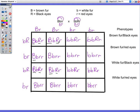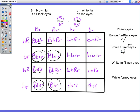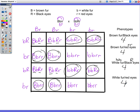So we've got one that has brown fur with black eyes. Going through and counting: one, two, three, four. Then brown fur with red eyes — red eyes is two little r's: one, two, three, four. White fur with black eyes — two little b's and a capital R: one, two, three, four. And our last would be four that have white fur and red eyes. Four plus four is eight, plus four plus four is 16. And that is how you do a dihybrid cross.